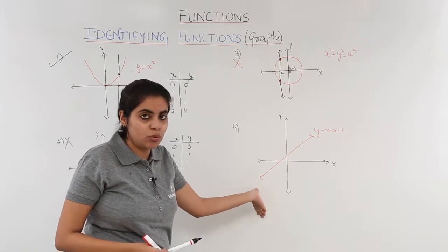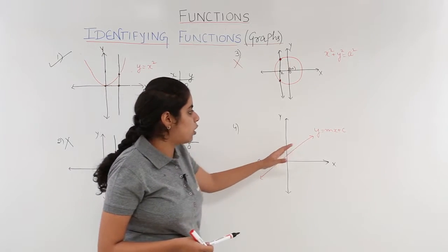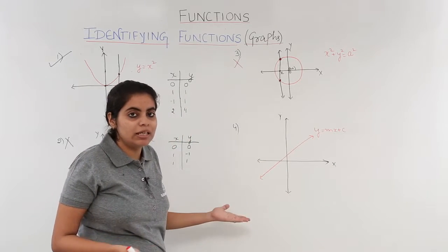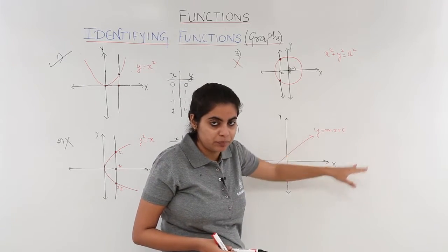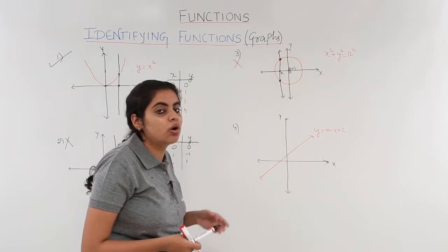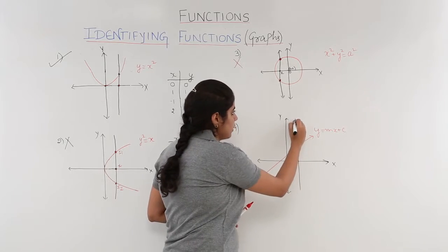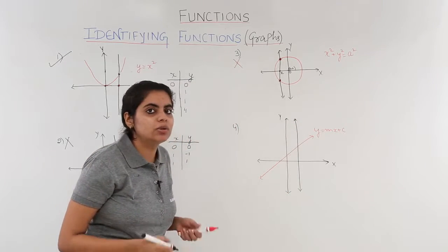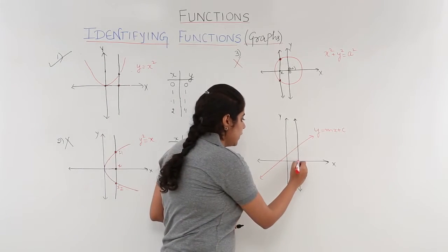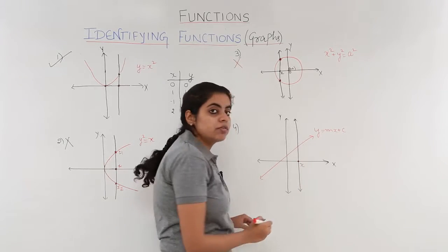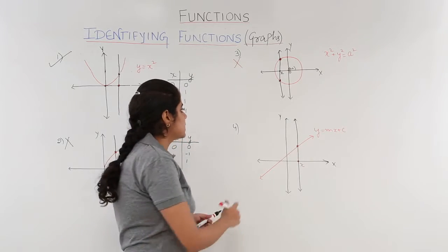Let's move on to the last example: a straight line, y equals mx plus c, which you may have studied in eleventh class. M is the slope and c is the y-intercept. Any line drawn parallel to the y-axis intersects this graph at only one point — that means for a particular value of x, there is only one image. So yes, it is a function.